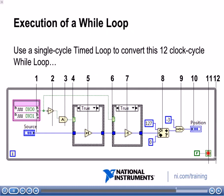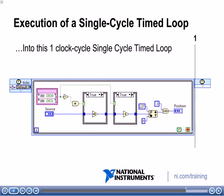Twelve clock cycles seems like a lot for the functions shown here. One way to optimize this is to use a single cycle time loop, which converts this twelve-cycle while loop into something much more efficient. By putting the code in a single cycle time loop, it will only take one clock cycle to execute all that code. The single cycle time loop removes the enable chain, which is what allows all these functions to execute within one clock cycle. We'll talk about that more in the next section.